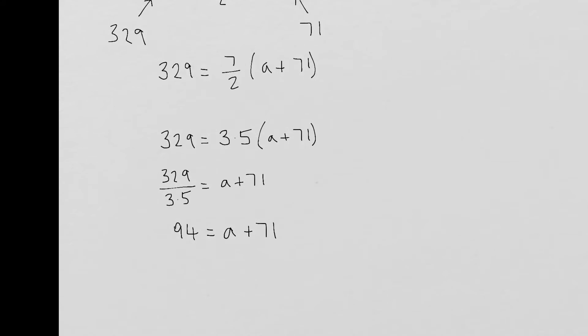So here I've just done a little bit of rearranging. So seven over two is the same as three and a half. So if I divide by that on the other side, I'll get 94. And then 94, take away the 71, tells me that the first term in the sequence is in fact 23.